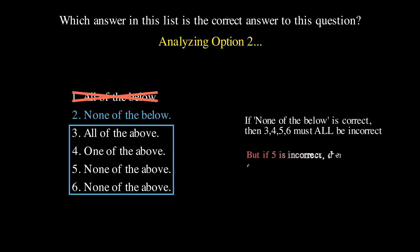Now, if option five, none of the above is incorrect, that means at least one of the options above it must be correct, creating a contradiction. Option two must be also false.